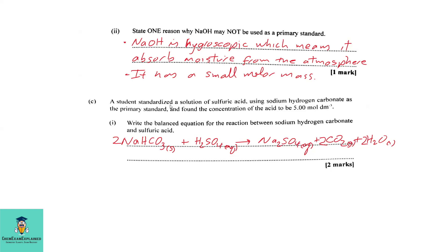Part C: A student standardized a solution of sulfuric acid using sodium hydrogen carbonate as the primary standard and found the concentration of the acid to be 5 moles per dm³. Part C1: Write the balanced equation for the reaction between sodium hydrogen carbonate and sulfuric acid. The reaction produces a salt, carbon dioxide, and water. The sodium bicarbonate must be dissolved in water and then titrated with sulfuric acid. So it is sodium hydrogen carbonate plus sulfuric acid to give sodium sulfate, carbon dioxide, and water. Then balance the equation after putting in all the state symbols.